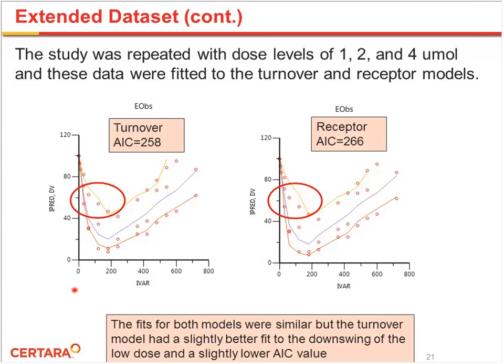In summary, when fitting classical PK-PD models, the PK model is essentially just a smoothing function. If PK data have been collected at the same time as PD, you can bypass fitting the PK model and use the PK data directly. In this particular dataset, fits improved by having a dose range going from minimal to maximal effects. There was a slight benefit to using the turnover model versus the receptor model, although the fits are pretty similar.